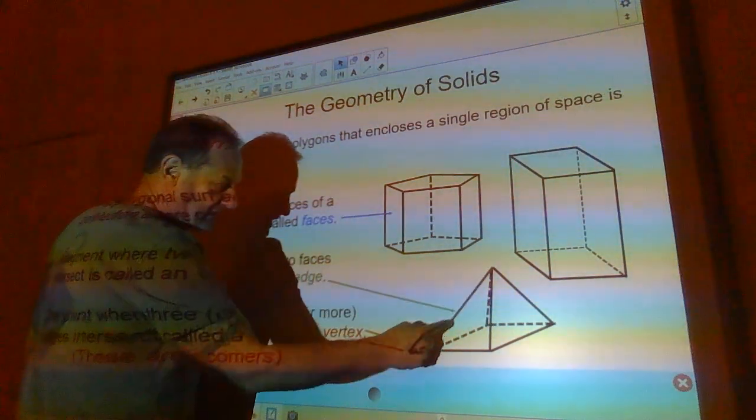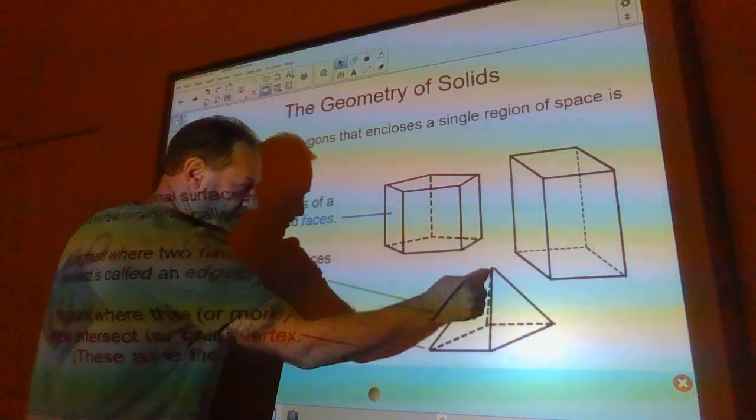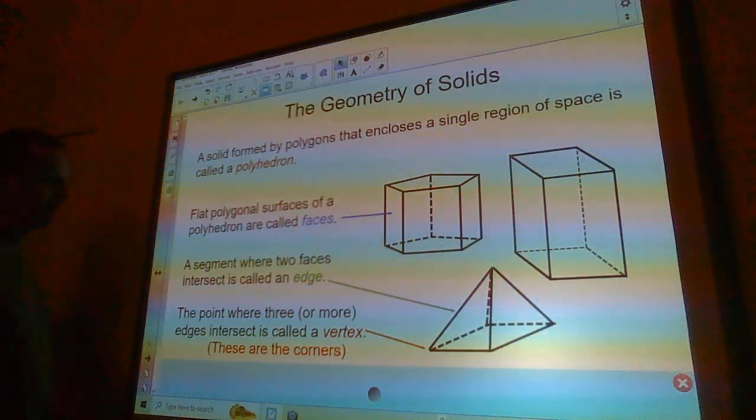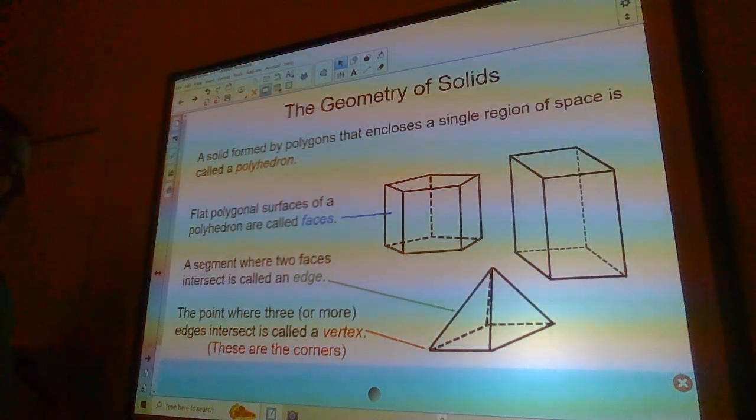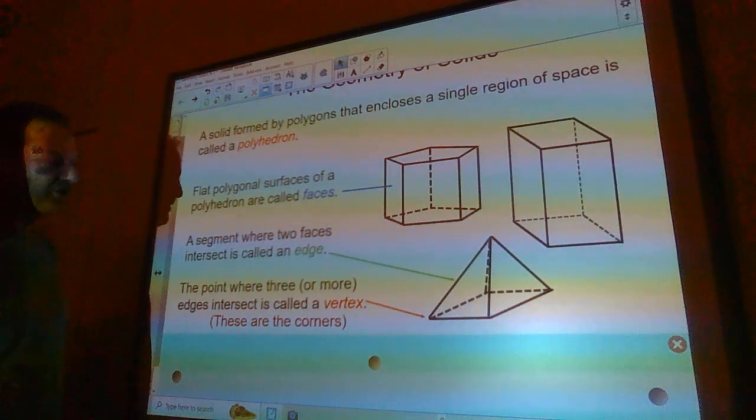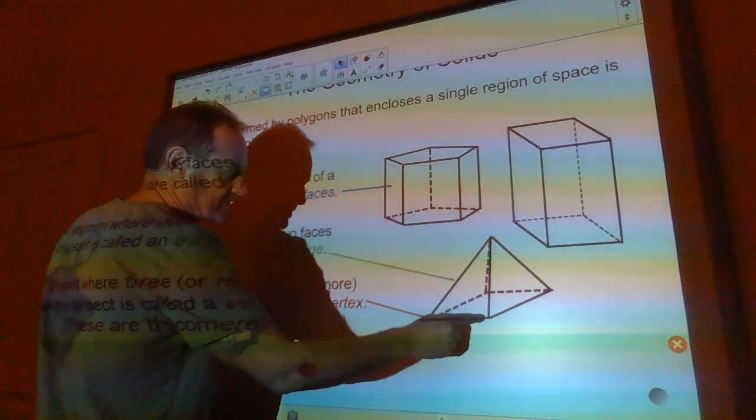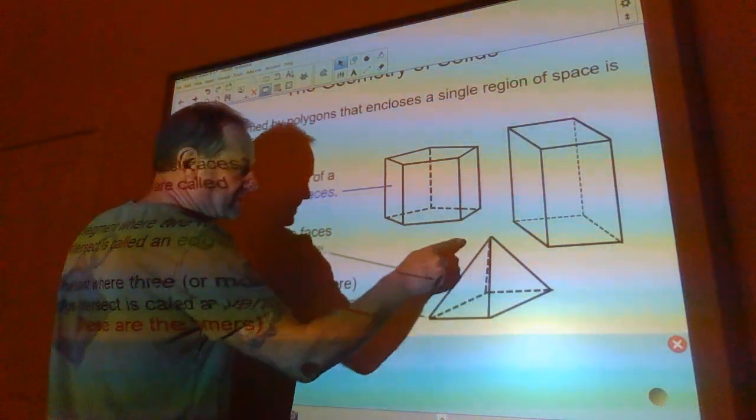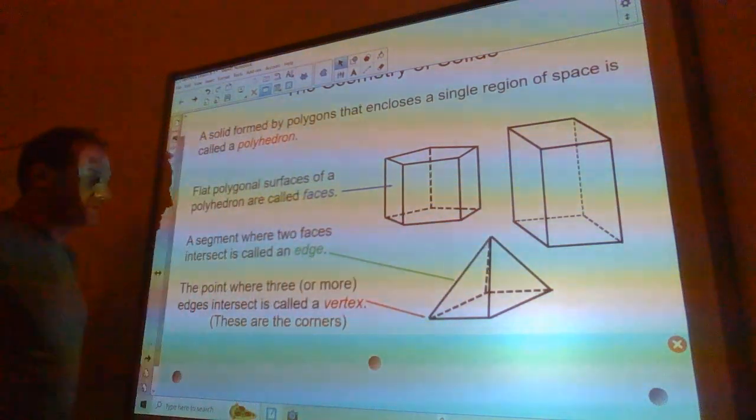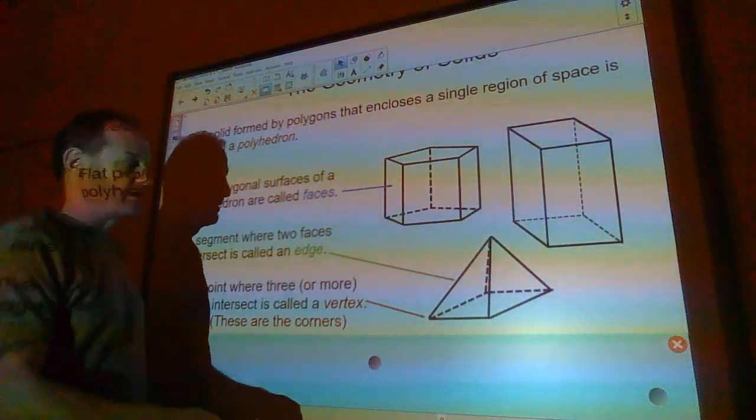Now the lines that form the pyramid or prism or whatever we have are called edges and the point where three or more edges intersect is called a vertex. So here's a vertex. This has five vertices. This one has ten vertices. This one has eight vertices. Those are basically the corners.